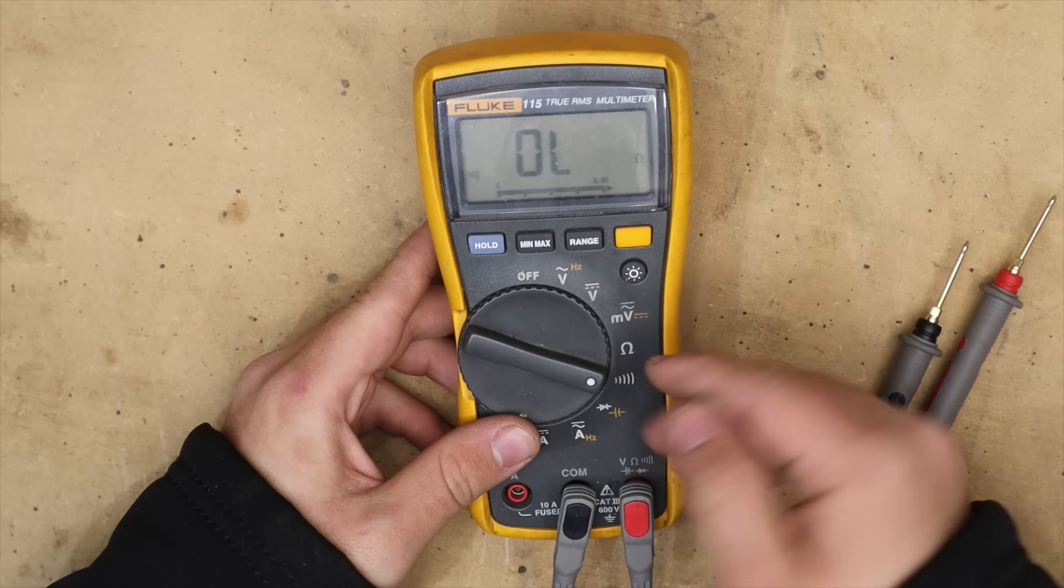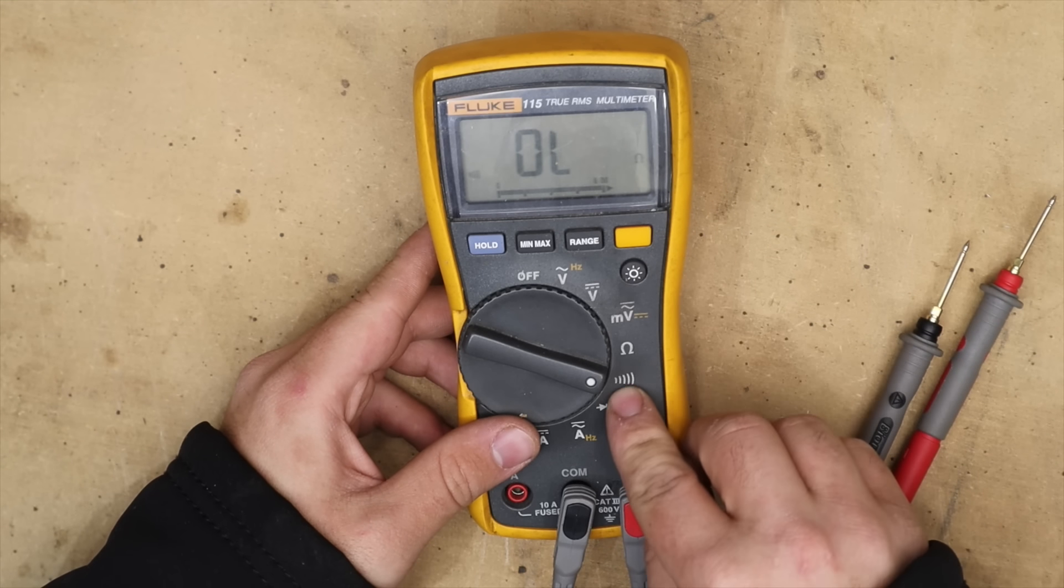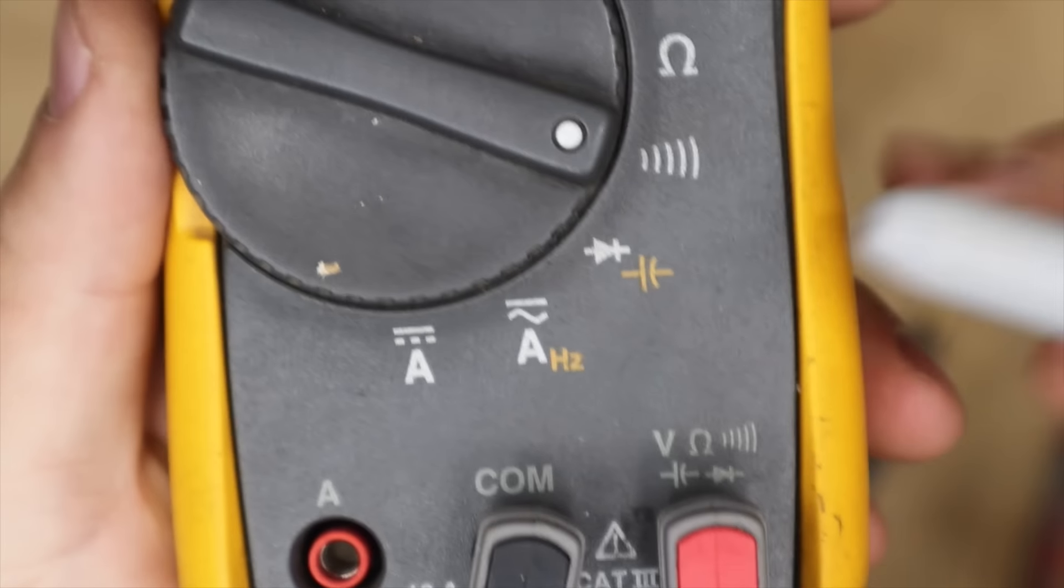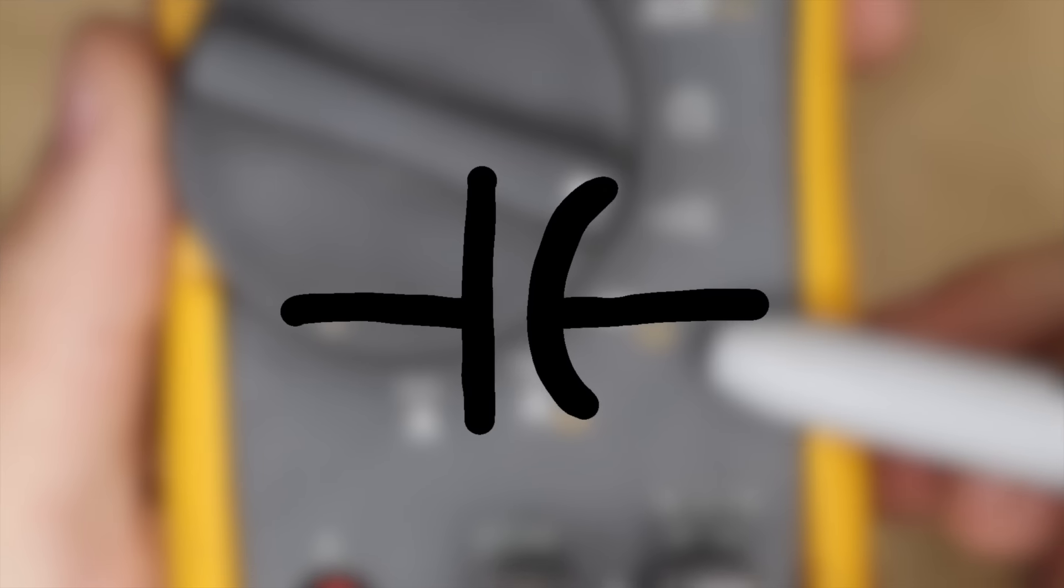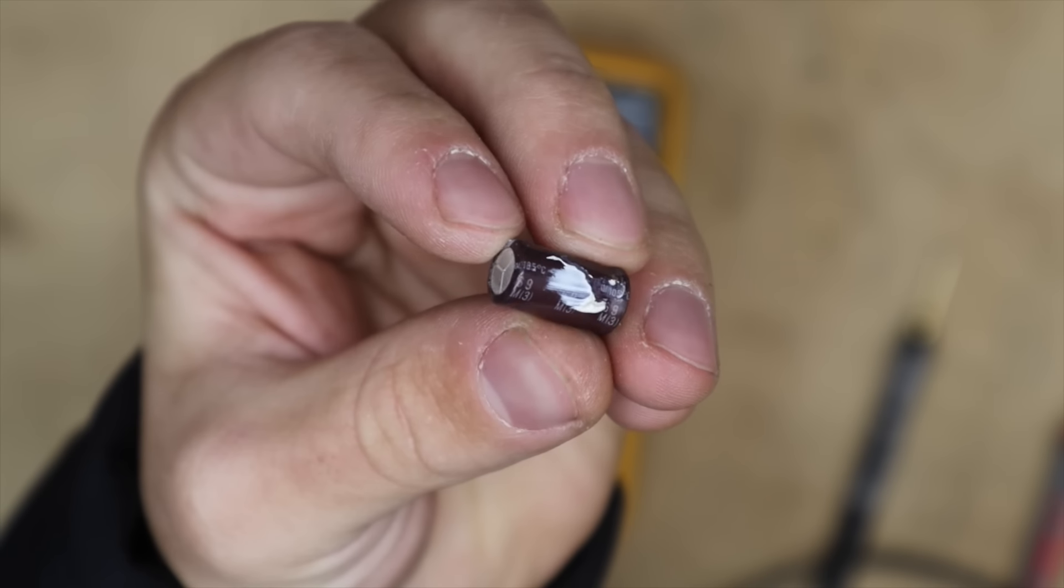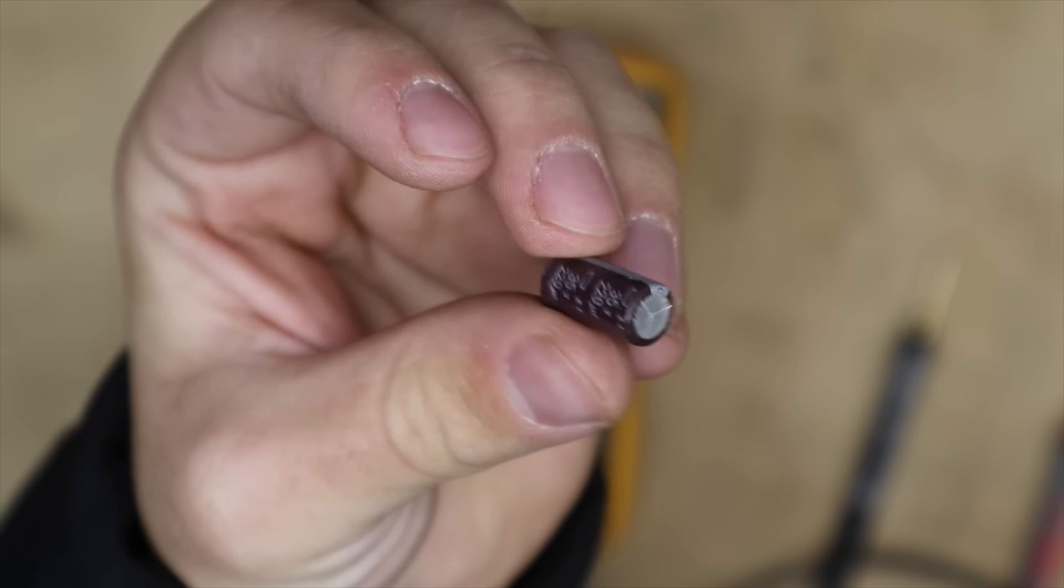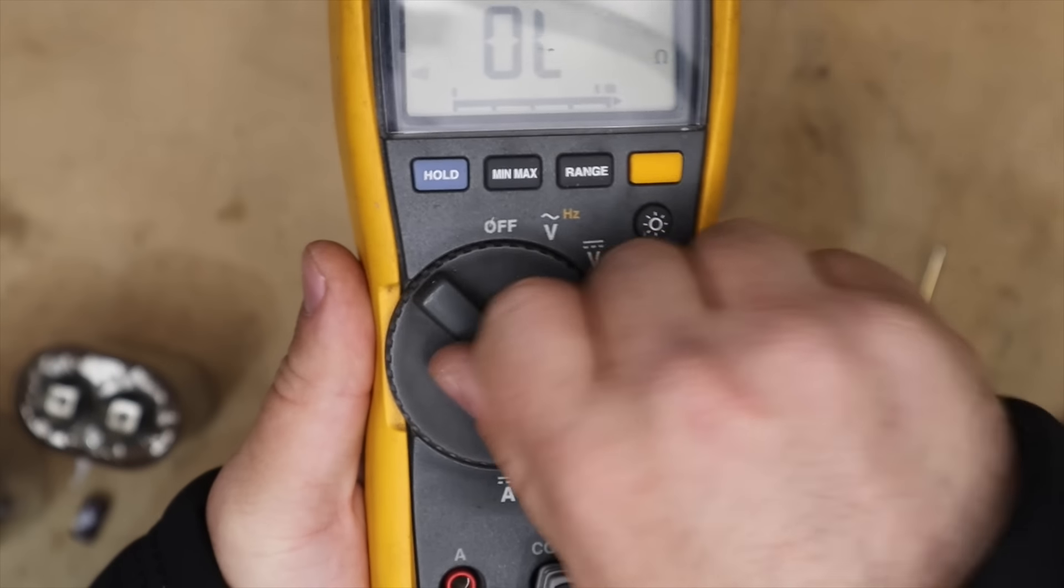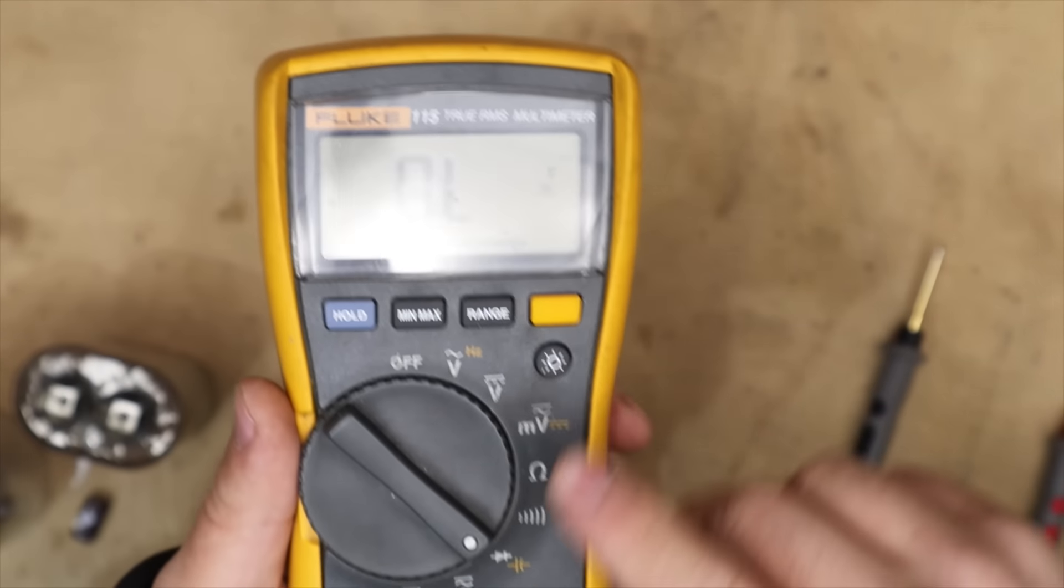These three features—voltage, ohms and continuity—are the most common but we have a lot more things that multimeters can do. Next we have capacitance which is represented by this symbol. Capacitors are devices that store energy for later use in high demand applications. To test these we set our meter to the option and in our case we have to press the selector button to switch to capacitance.